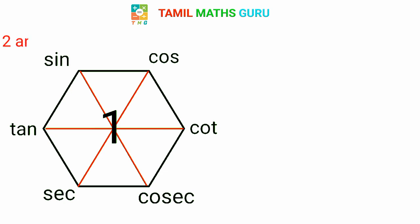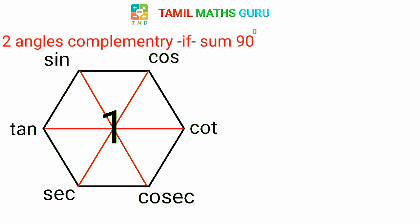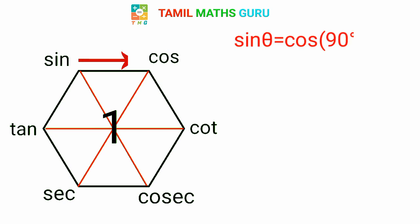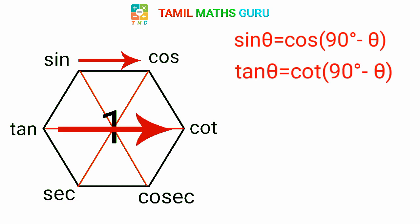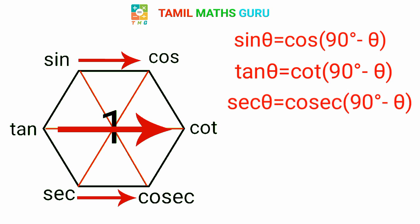We have two complementary angles — two angles are complementary if their sum is 90 degrees. If we use complementary angles, sinθ is equal to cos of (90−θ). Also, tanθ is equal to cot of (90−θ). And cotθ is equal to cos of (90−θ).